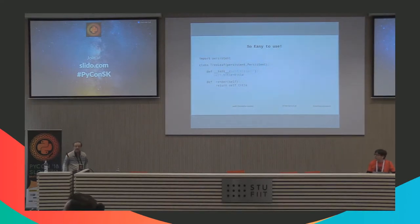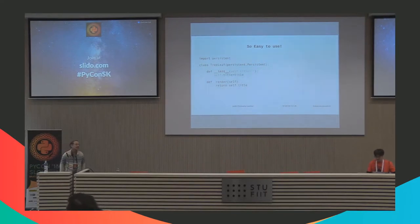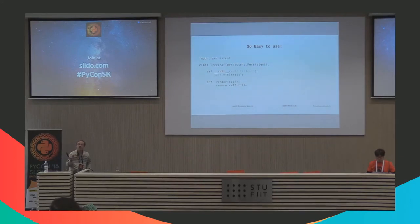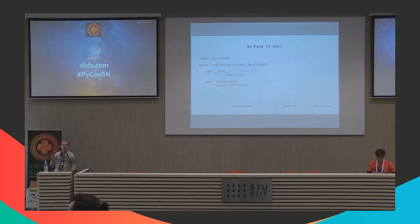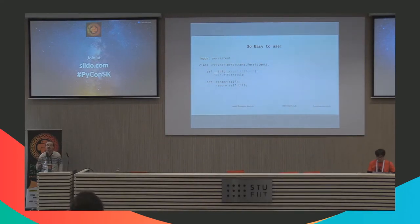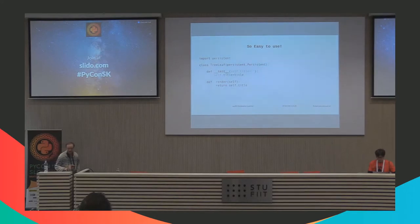It's really easy to use. Here we have a tree leaf object. We have the initialize method, set the title, and we have a render method. All you have to do is subclass off persistent objects. You have persistent objects, you have persistent containers, one or two other persistent types. You subclass off of them, your objects become persistent, your graph of objects becomes persistent, your application becomes persistent. Really easy.